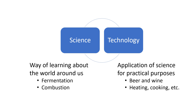Another example where the technology came long before the science is combustion. Combustion is a type of chemical reaction where a fuel is burned — it reacts with oxygen and releases a lot of energy. We've used combustion for thousands of years for heating and for cooking. These two examples show us a scenario where technology came before science.